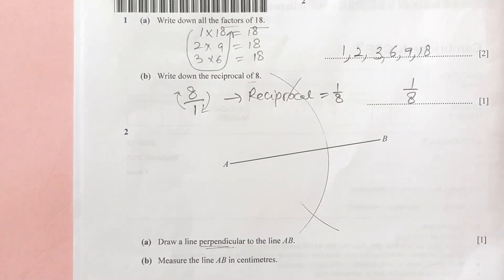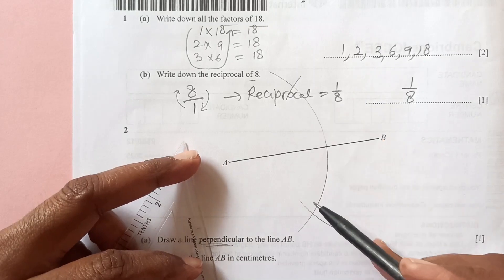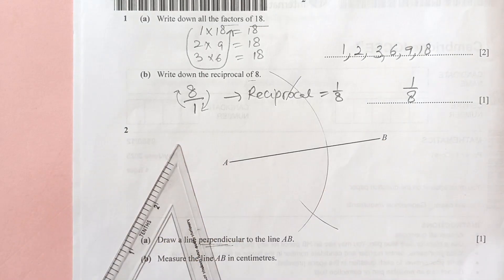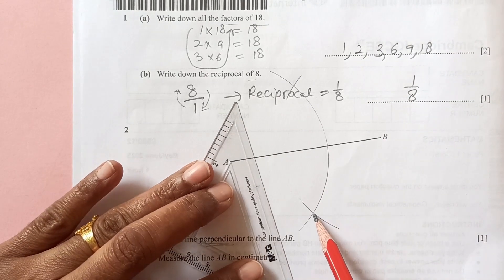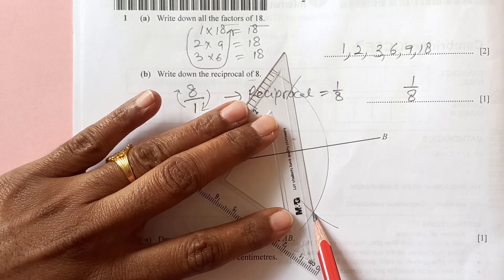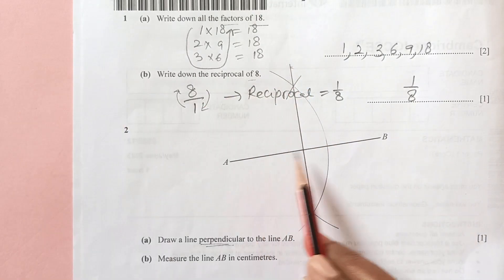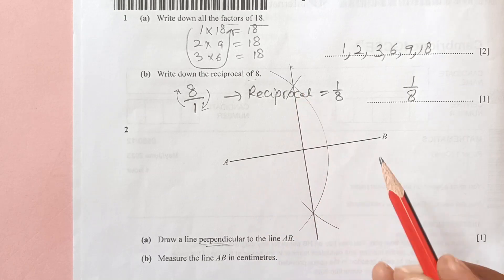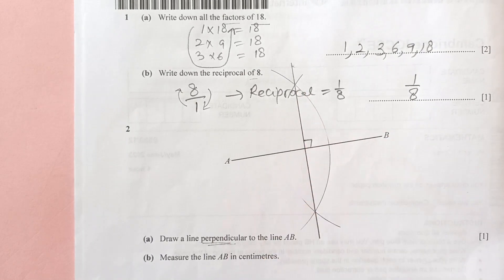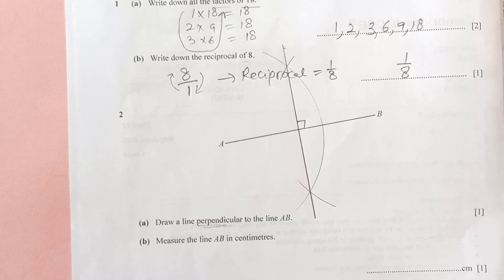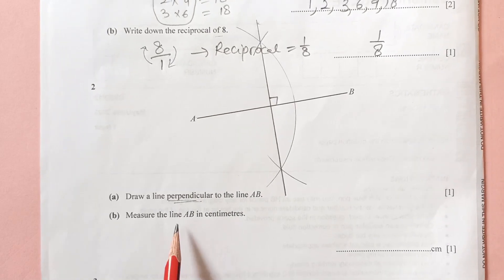With the same compass opening, place the needle on point B and draw another arc. You'll now have two intersecting points from the two arcs. Join these two intersecting points and that line is perpendicular to AB.